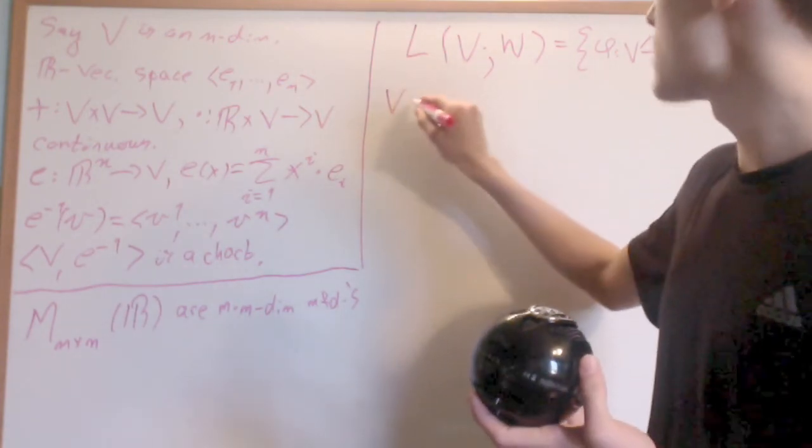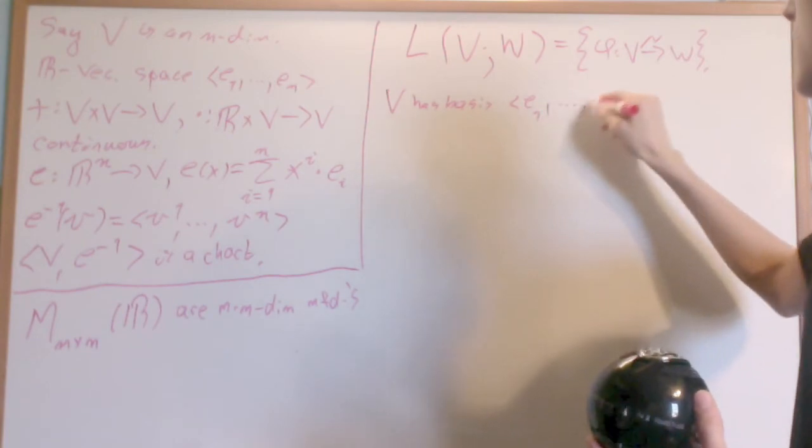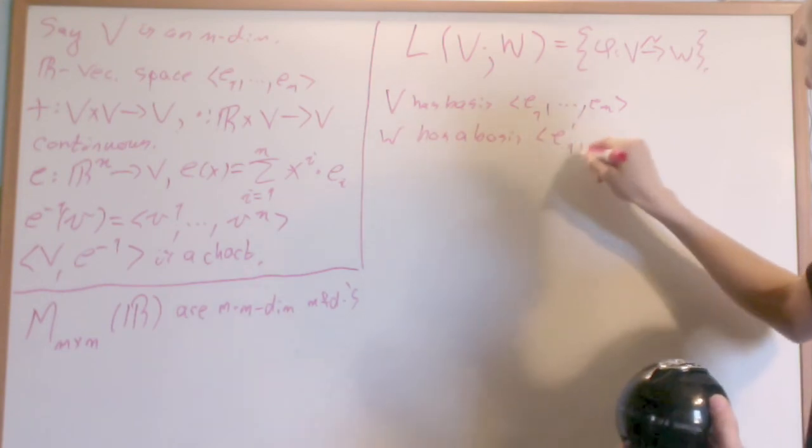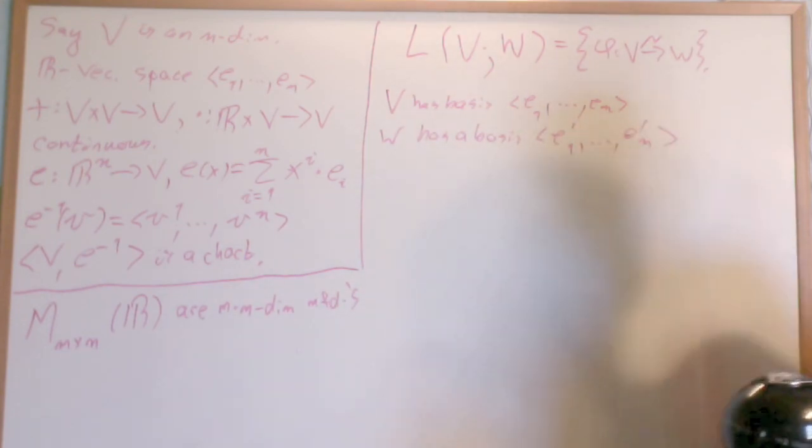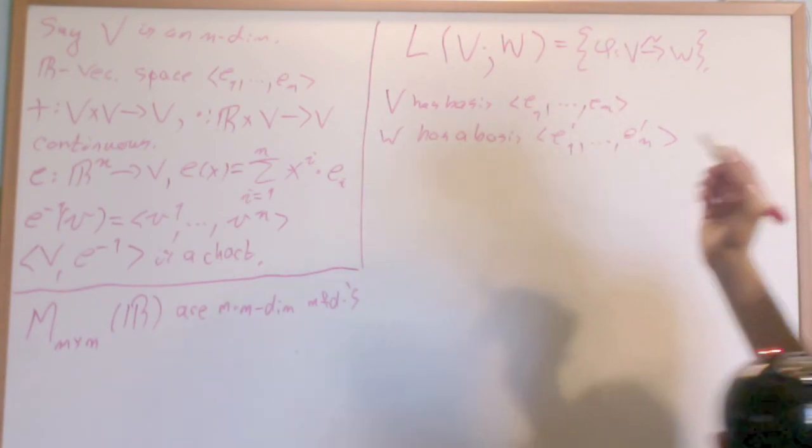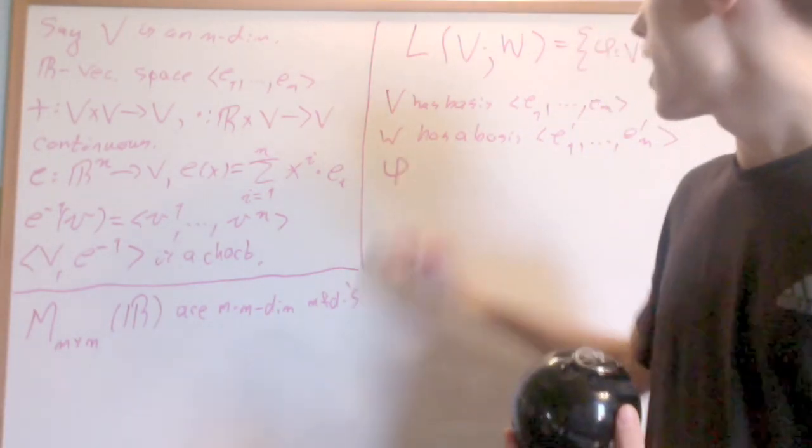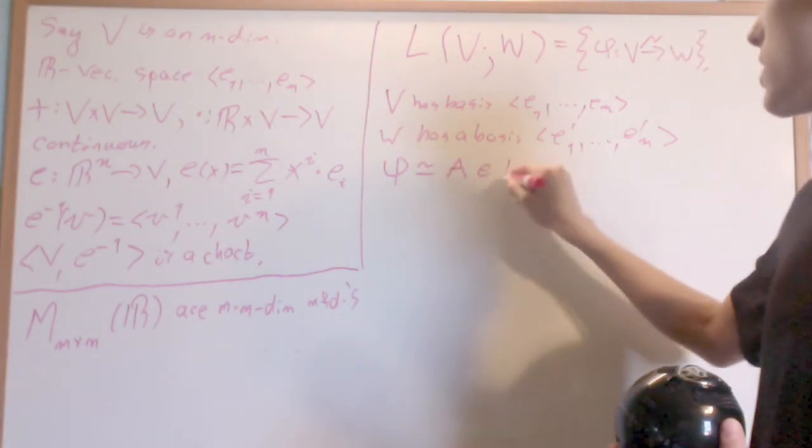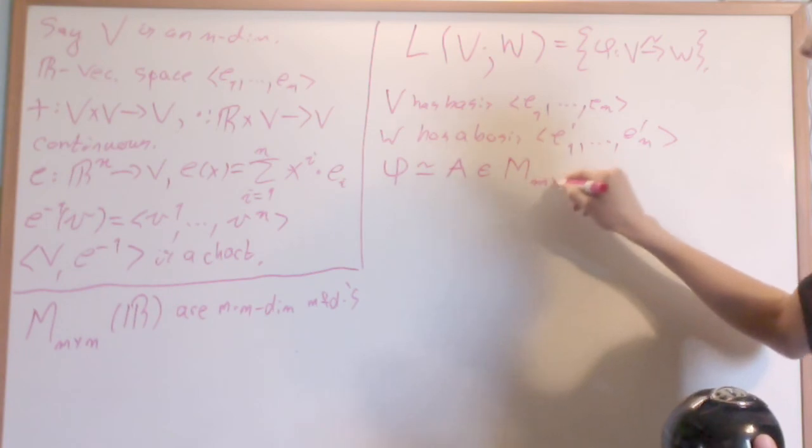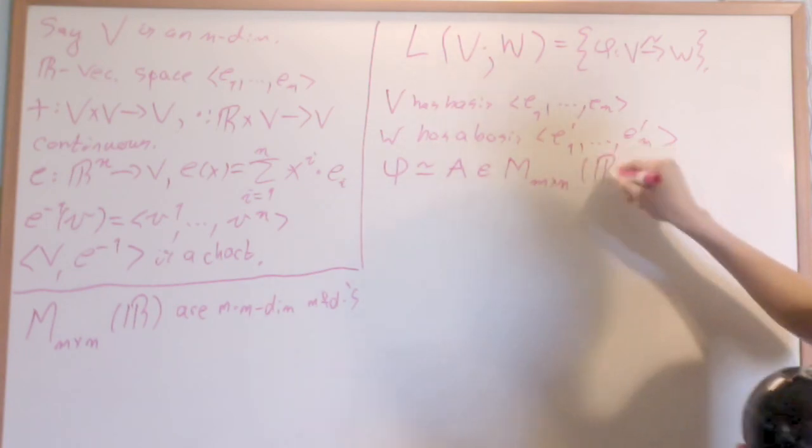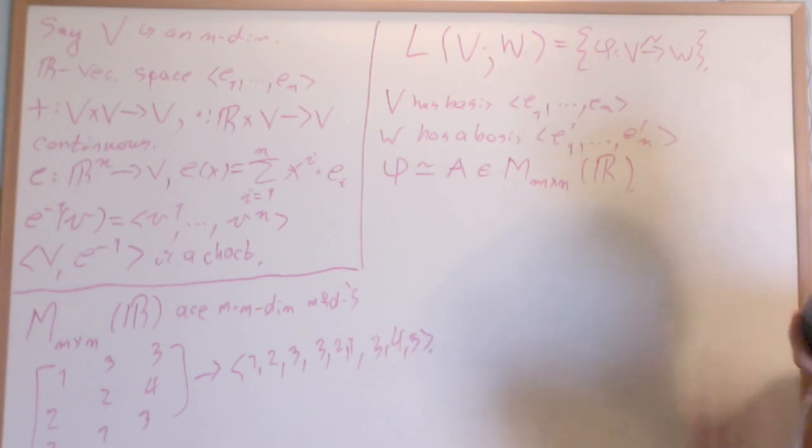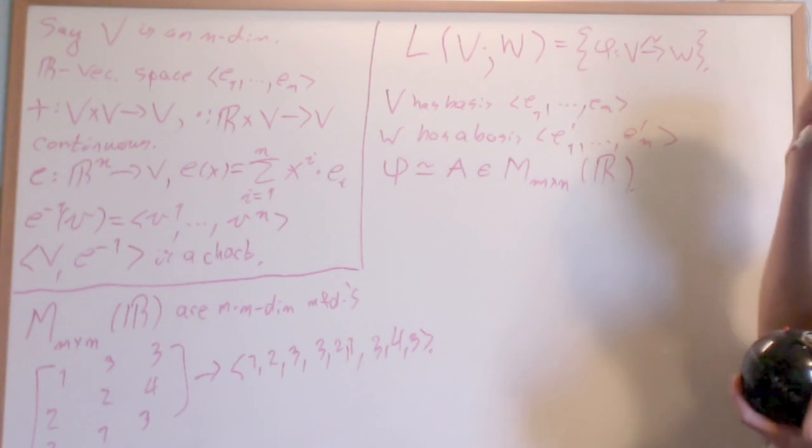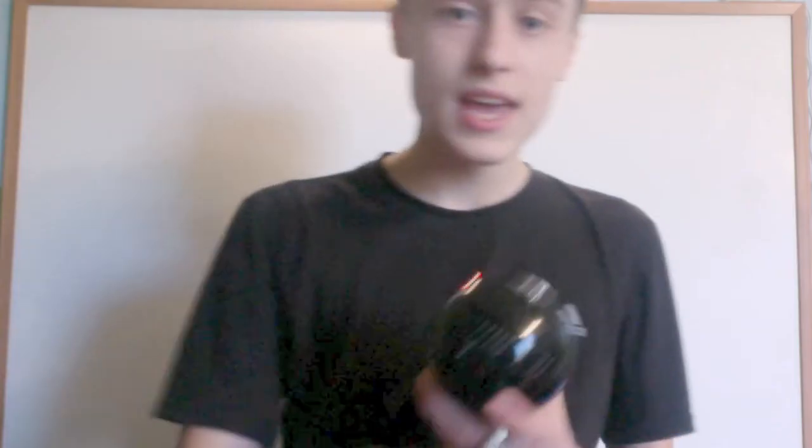The way we do this is by a homeomorphism with matrices. If V has a basis E1 to En and W has a basis E prime 1 to E prime m, then I can represent phi as a matrix A, which is an m by n matrix of R. By the fact that the m by n matrices of R are given a natural manifold structure, we're good. That's it.